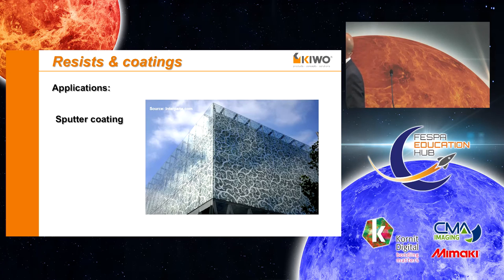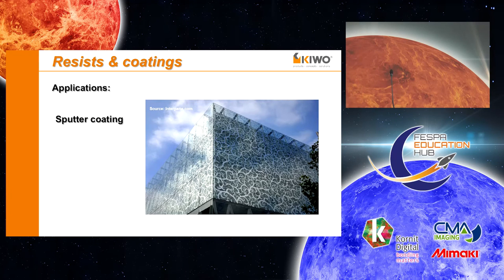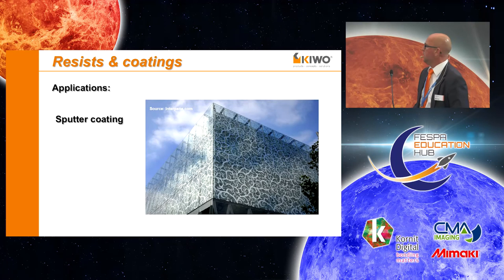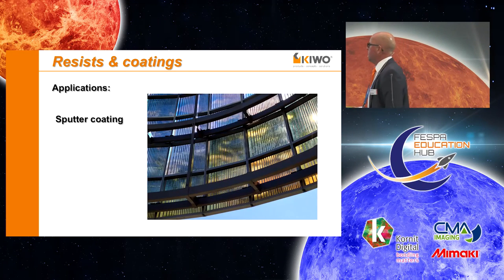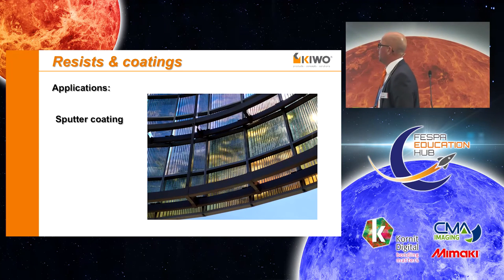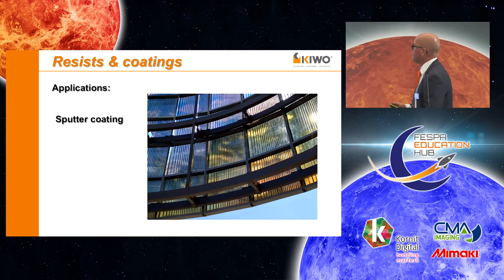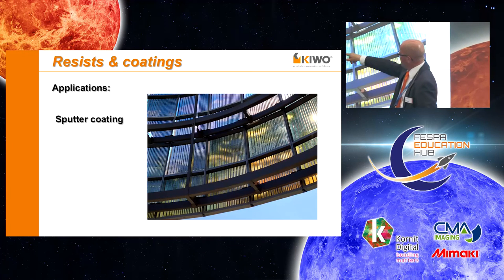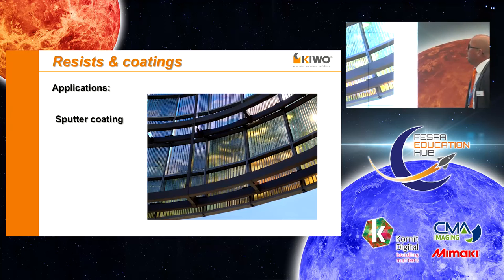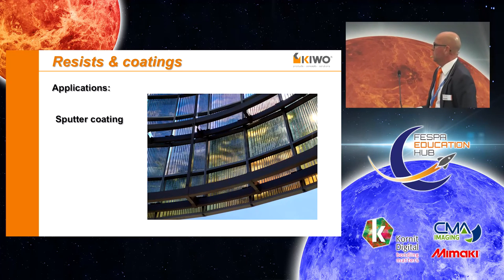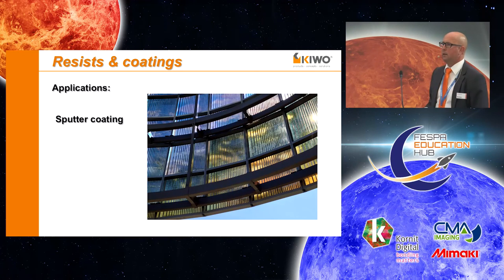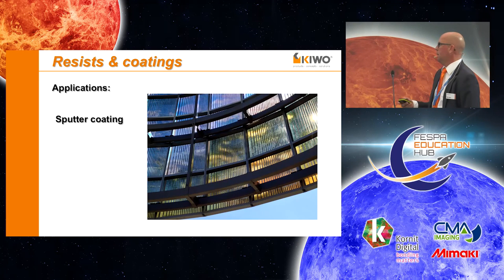Here is an example of a glass facade which is sputter coated. The silver patterns are sputter coated — this is a shopping center in Leicester, UK. And this is a picture of our last project produced with our screen-printable resist. You can see the sputter-coated lines. That was a rail station in Southern California, and the sputter coating protects the building from heating through sunlight.